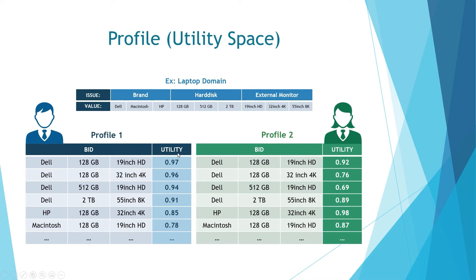Utility values are defined between zero and one. A utility value of one represents the most preferred bid, while a utility value of zero represents the least preferred bid. There is another profile assigned to agent two, and for the same bids the utility value of profile one and the utility value of profile two are different.